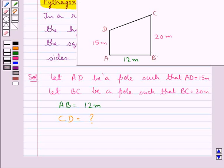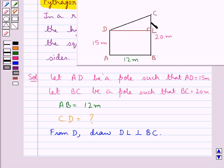So first of all from D we draw DL perpendicular to BC. So this DL is perpendicular to BC.